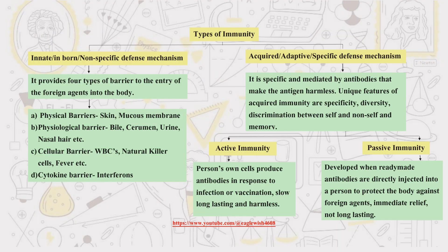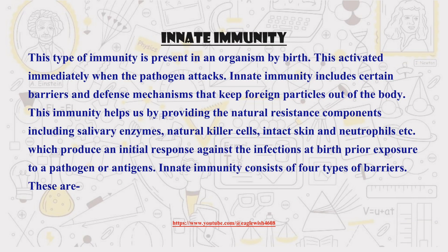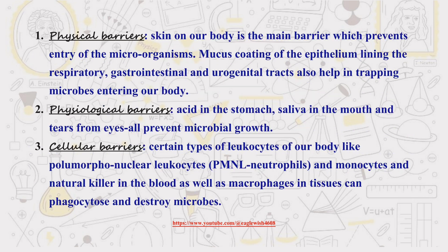Now let's explore the two main categories of immunity. Check out this handy flowchart to see how it all breaks down. First up is innate immunity. Think of it as your body's first responders, always ready to defend against anything that looks suspicious. Innate immunity is quick, nonspecific, and includes physical, physiological, cellular, and cytokine barriers that work together to keep you safe. We'll take a look at some key examples.